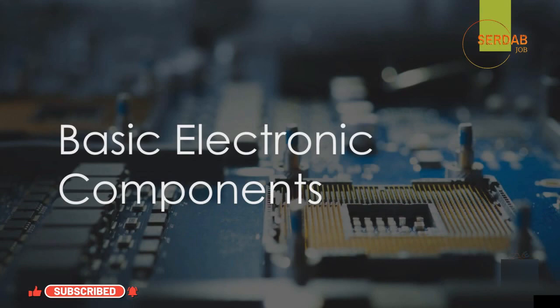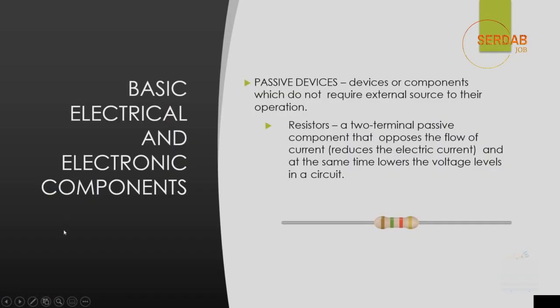Now that we have all the tools needed for our device maintenance, we need to get a clear idea about the basic electronic components. First, we are going to start with passive devices. Passive means devices or components which do not require an external source for their operation. The first one in this list is resistors.